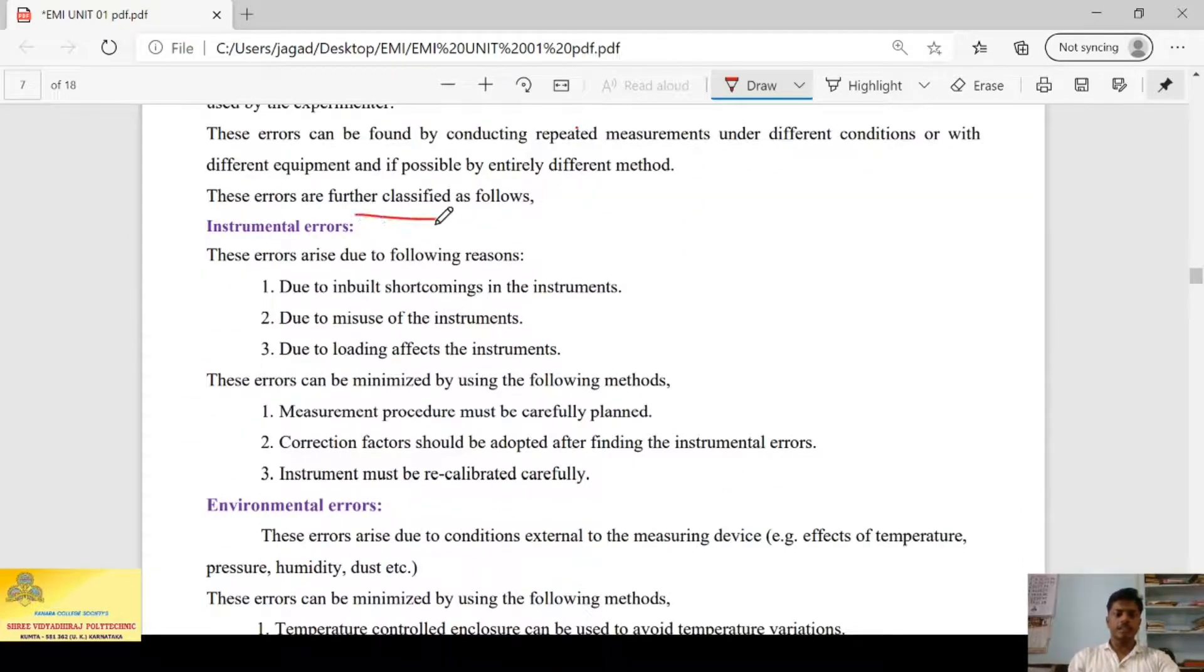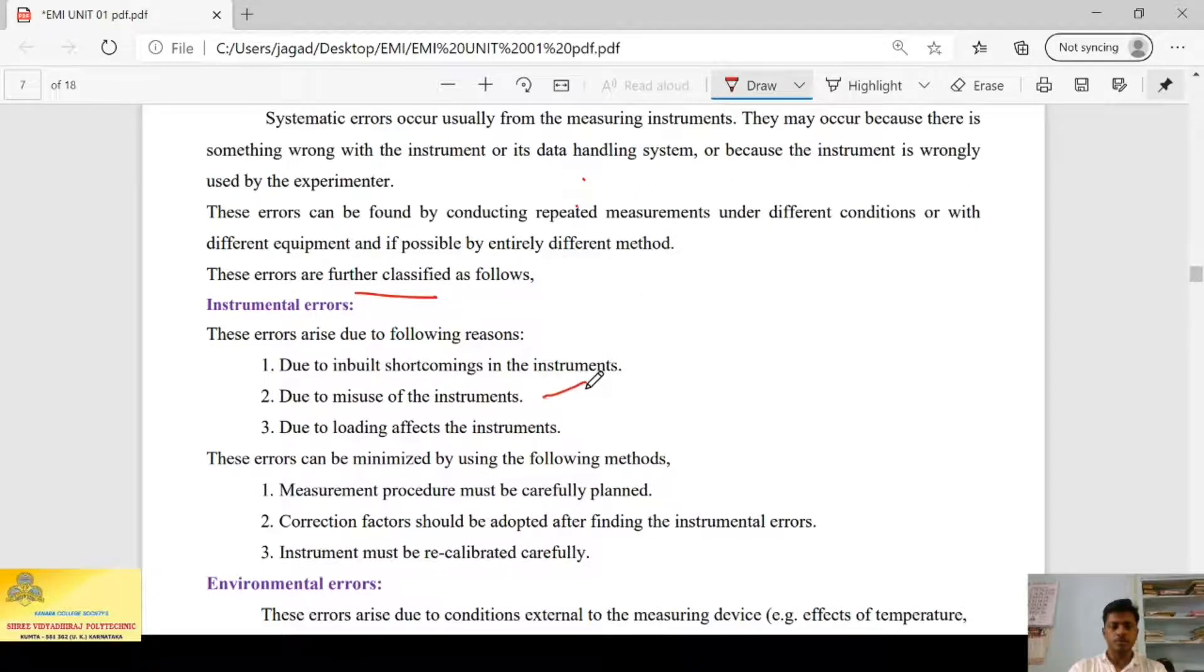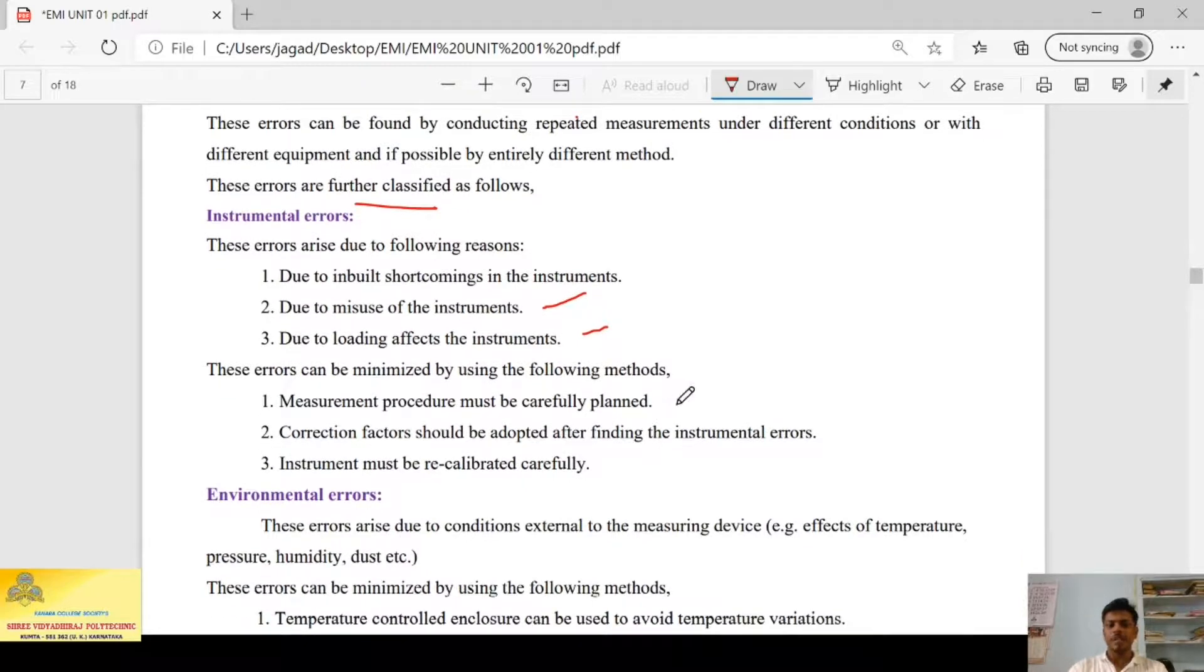First one is instrumental error. These errors arise due to following reasons: inbuilt shortcoming in the instruments, if there is a fault in the instrument, due to misuse of instrument, then due to loading effect of the instruments. There is a limitation to use an instrument. If you put very less value on it or if you put more than a range, then the instrument will not behave properly and it gives an error. That comes under the instrumental error.